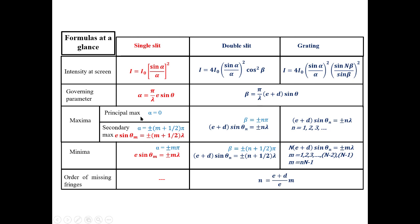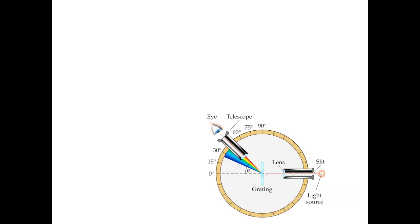The maxima in case of grating is given by (e + d) sin θ = nλ, where n is an integer. The minima in case of grating is given by N(e + d) sin θ = mλ, where capital N is the total number of slits in the grating. Here m runs from 1, 2, 3 to N − 1, and can also be written as nN ± 1. The missing order of fringes, same for double slit or grating, is given by n = (e + d)/e × m.